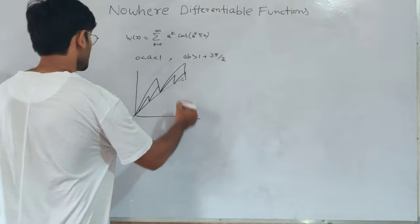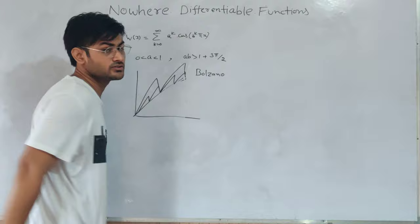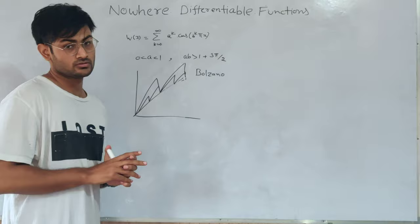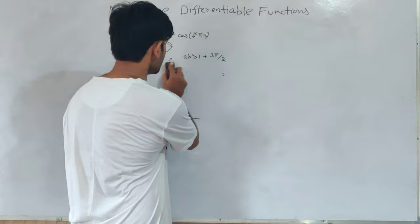So this function was given by Sir Bolzano. The first example of nowhere differentiable functions. But it was not published. The first published was the Weierstrass function. This is why we have been reading the Weierstrass function. Basically, I do need to give you the whole proof that function is continuous and how it is not differentiable.